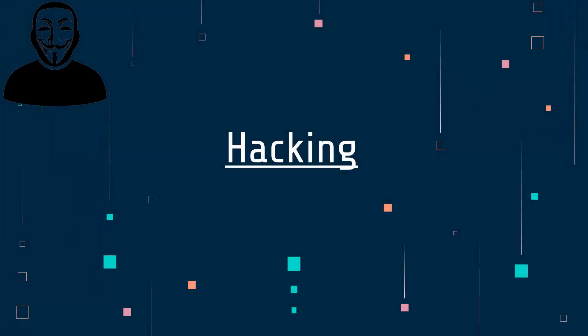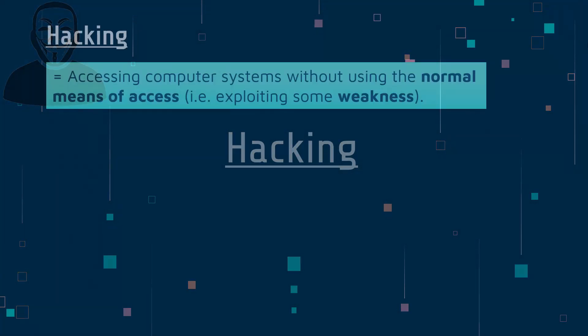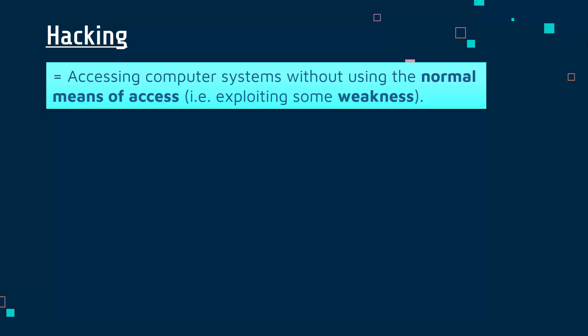Hi, we're going to look at hacking now — what it is, and the three main types of it. First of all, let's define it. So hacking is where somebody's accessing computer systems without using the normal means of access.